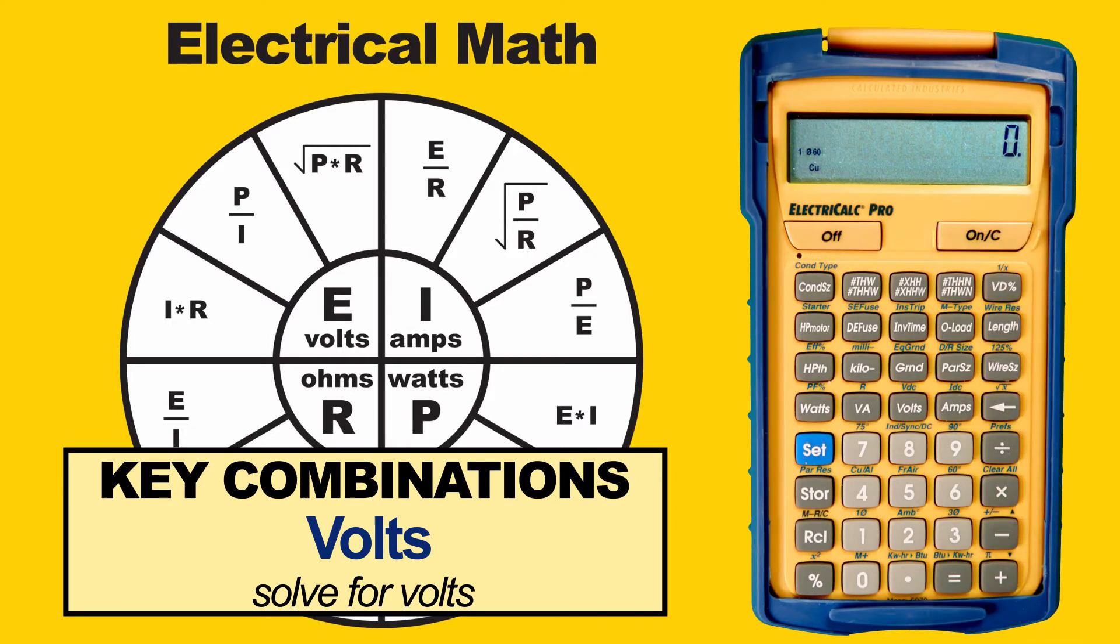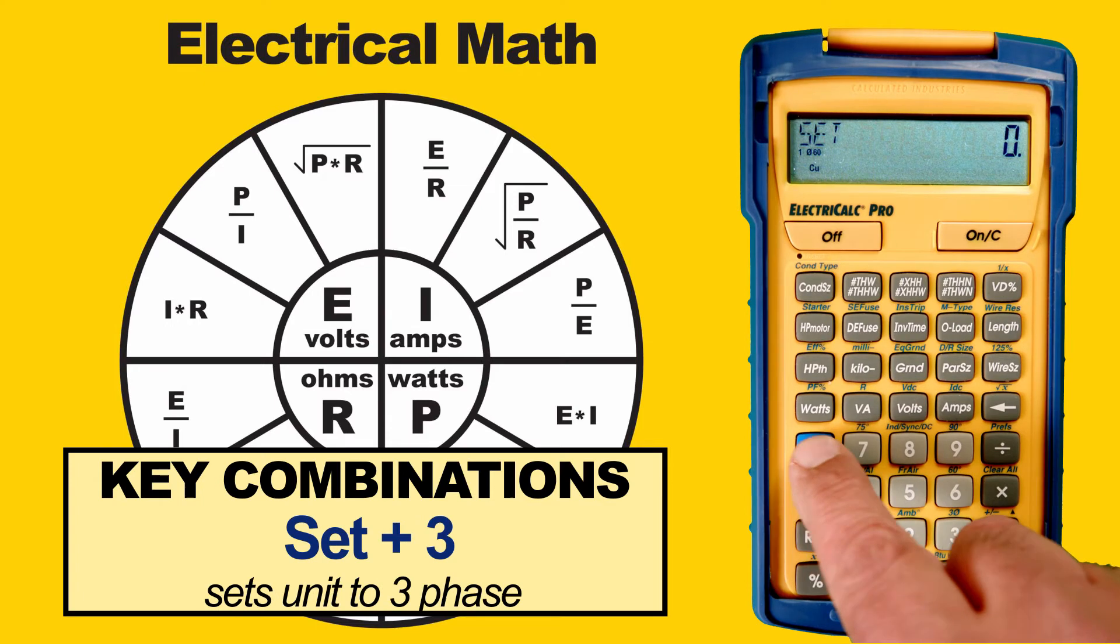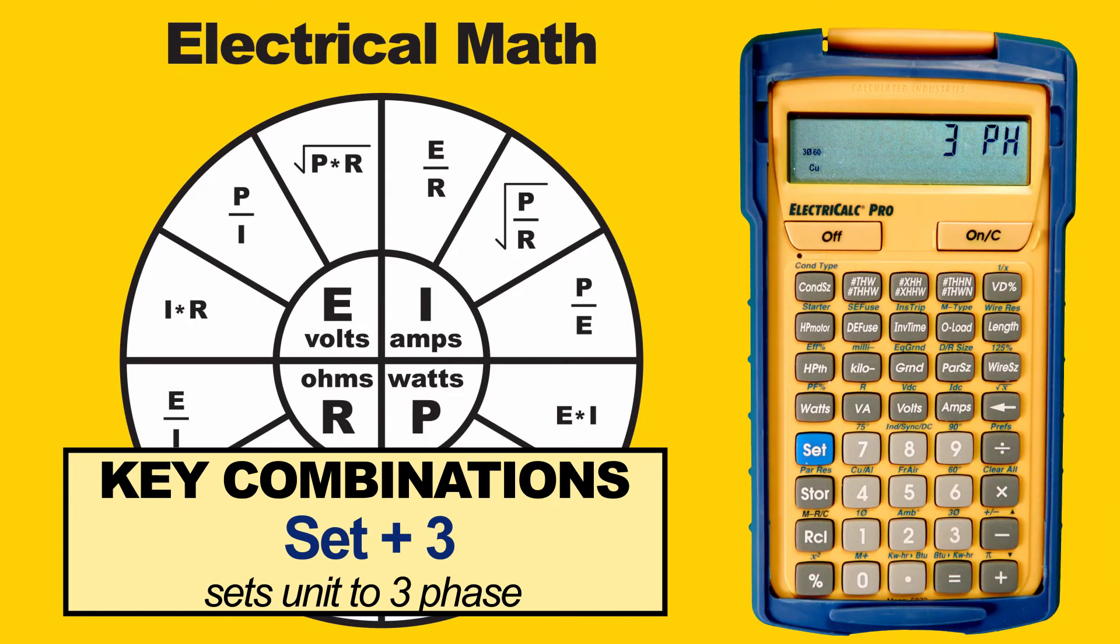We will clear this out. Now for a three-phase circuit, we first set it by pressing Set, then 3. This puts us in three-phase now. We want to solve for our current or our Amps.